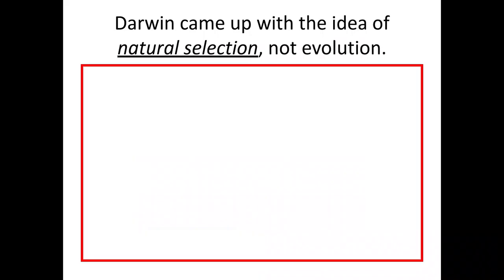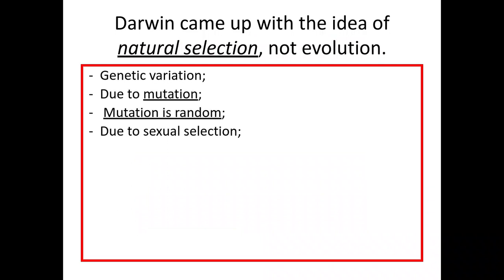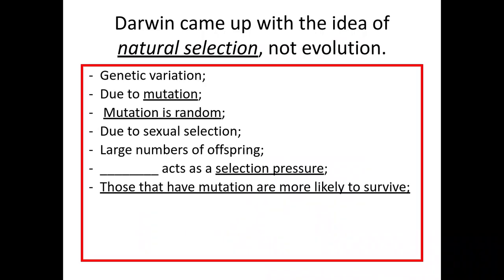Due to mutation that is random, due to sexual selection passing on those alleles, and due to a large number of offspring, we have the color of the trees or pollution or predation acting as a selection pressure.